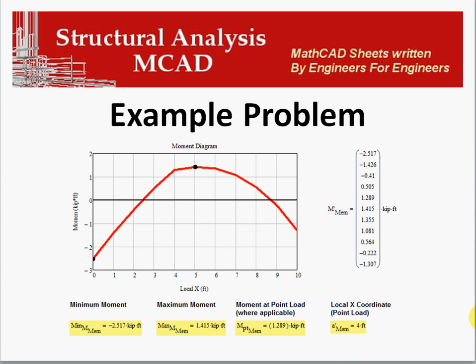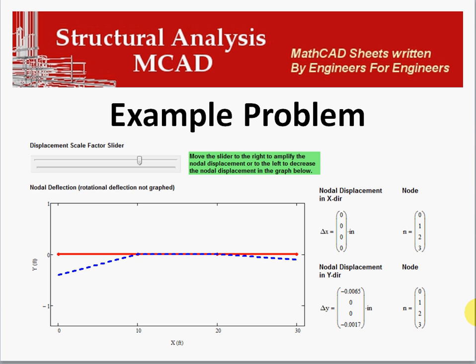The same applies to the moment and axial diagrams. And lastly we have a nodal displacement graph. Here you can adjust the magnitude of the exaggeration of the nodal displacement by moving this bar to the left or right. And then you have the exact location, the exact amount of nodal displacement in these x and y vectors here.